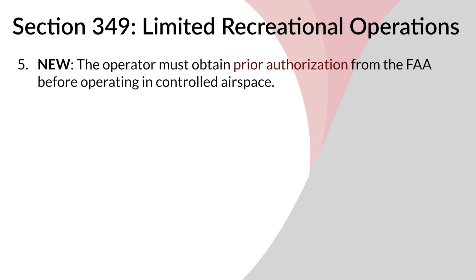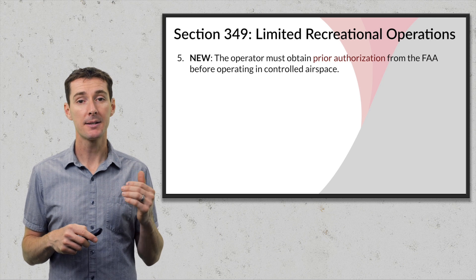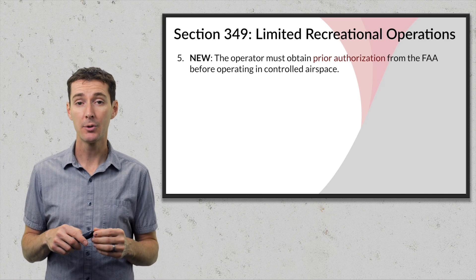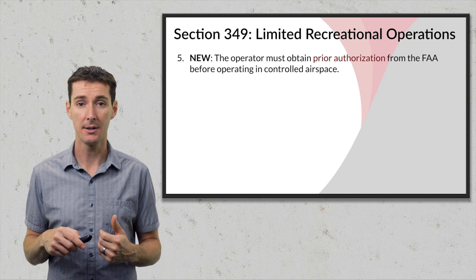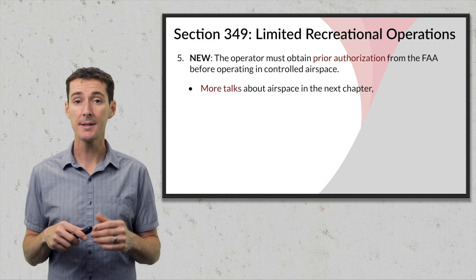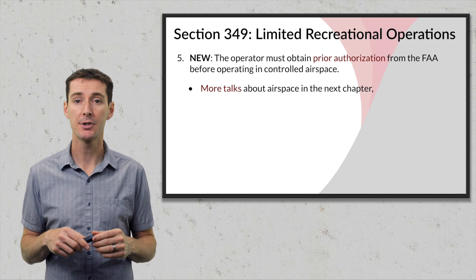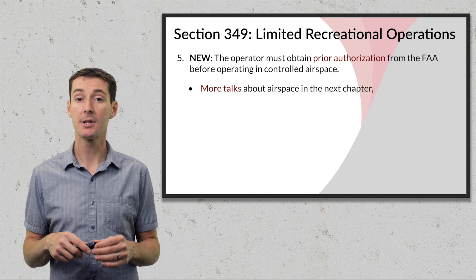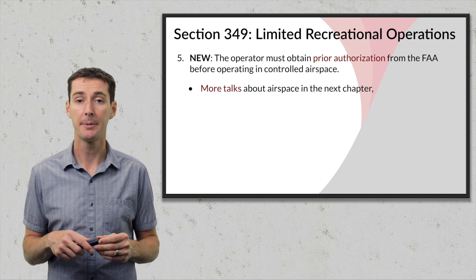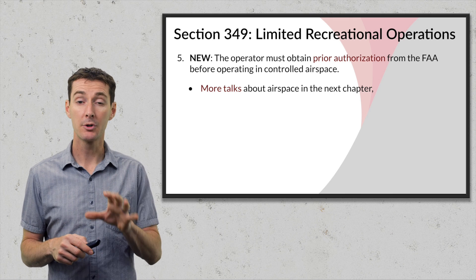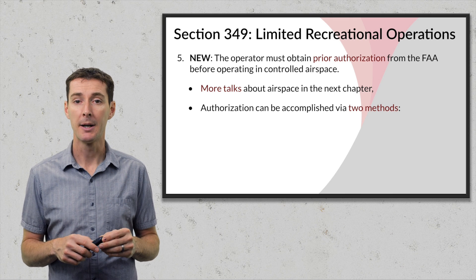Limitation number five is new: the operator must obtain prior authorization from the FAA before operating in controlled airspace. In the past, you had to call within five miles of a control tower, but that is no longer the case. You cannot call the air traffic controller on the phone anymore. You must get formal authorization from the FAA to operate in controlled airspace.